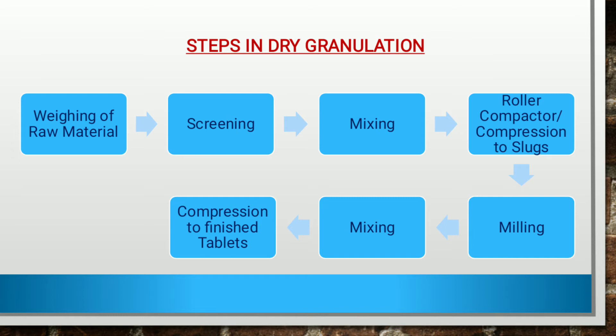Then comes roller compaction or compression to slug, where a tablet press is used. Further is milling, which is performed to reduce the size of granules obtained from roller compaction or slugging. Then is final mixing, done with specific excipients like disintegrants, colorants, flavorants, etc., along with glidants or lubricants if any. After this, it is used to compress the finished tablet.